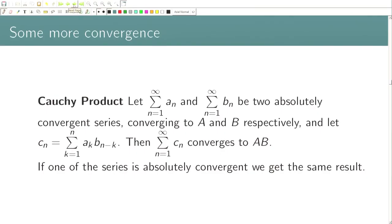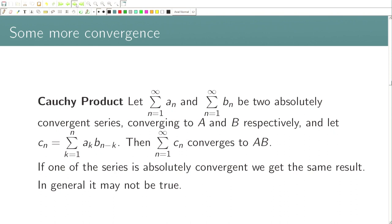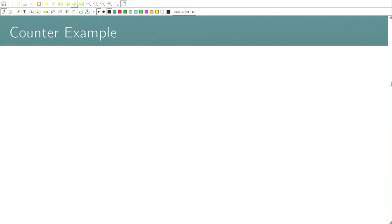It is natural to ask: suppose only that Σa_n converges and Σb_n converges — does it necessarily follow that the Cauchy product converges to a·b? In fact, the answer to this question is in the negative. Let us look at a simple example of two convergent series whose Cauchy product may not converge.